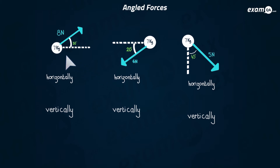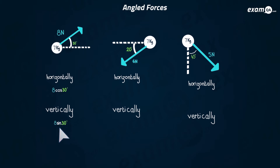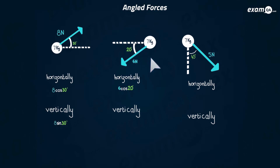Let's practise with three particles. For the first, the eight Newton force: to move it horizontal you crush the angle, so it's eight cos 30; to move it vertical you don't crush the angle, so it's eight sin 30. For the second, the six Newton force at 20 degrees: to move it horizontal, crush the angle — six cos 20; to move it vertical — six sin 20.